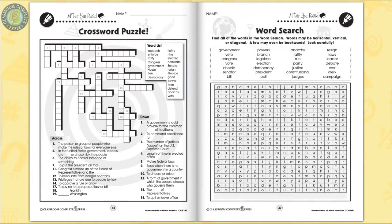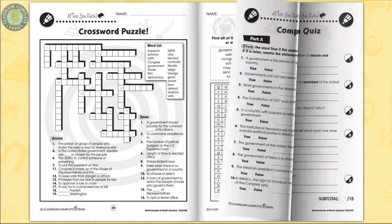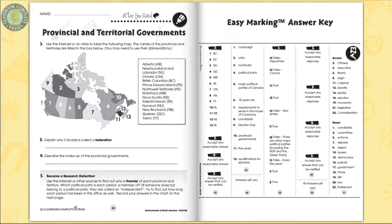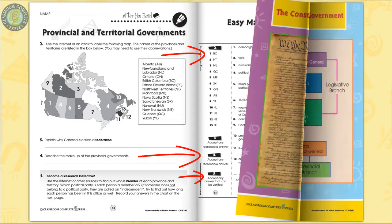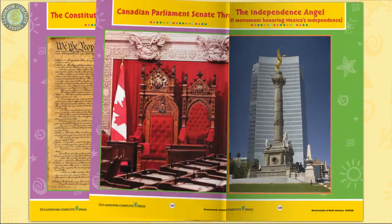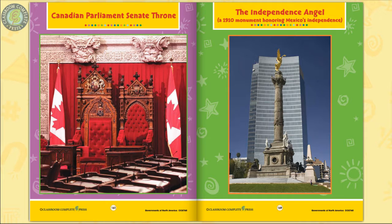Differentiated comprehension skills are measured by a crossword and word search puzzle, then a three-part comprehension quiz. The easy marking answer key works by lining up perfectly with the matching question pages. 18 color mini posters complete the resource. Get to know Canada's seat of government with full-color images.